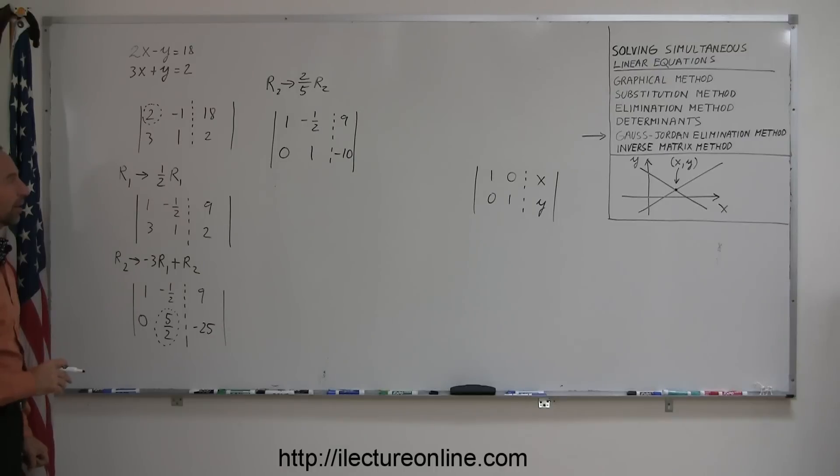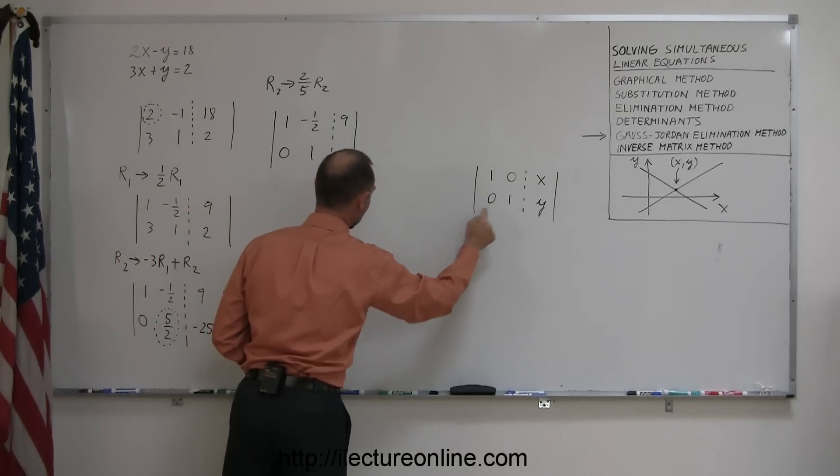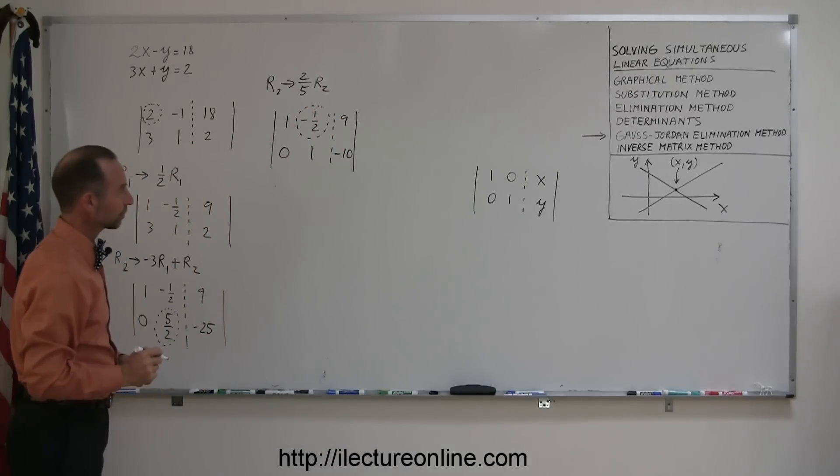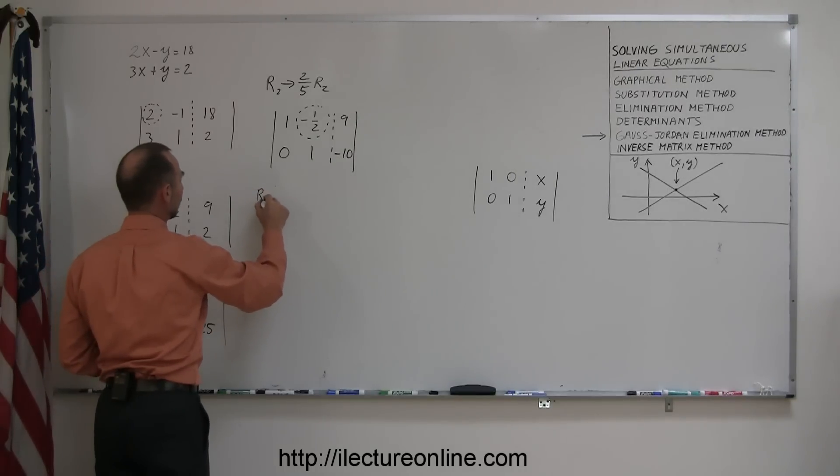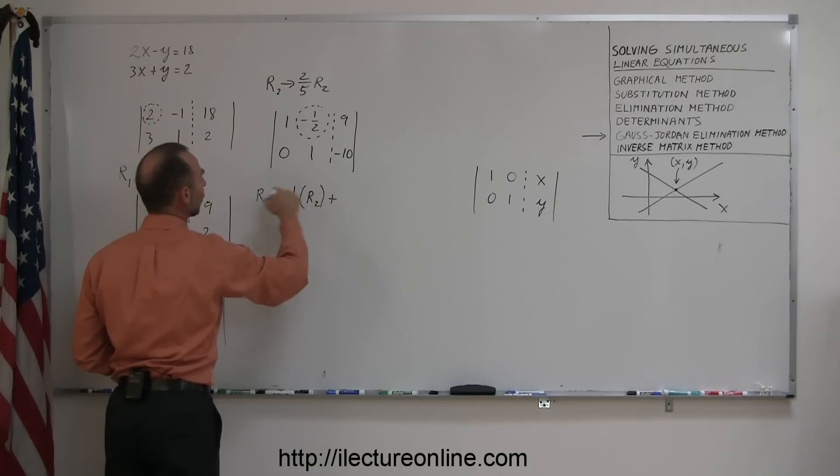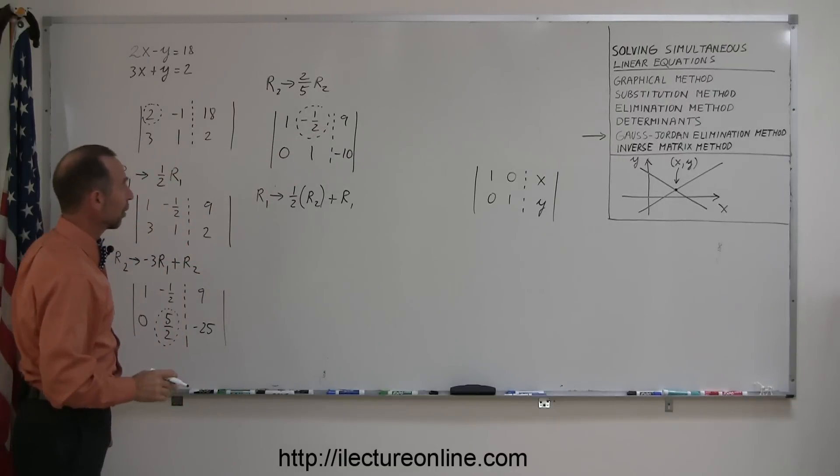The only thing left is I have to take this and turn it into a 0. So to do that, I take the first row and replace it by the negative of this number, which is a positive 1 half, times the row that has the 1 in it, which is row 2, and I add it to the row that I'm changing, row 1. Of course, I have to do that to every number in the first row.